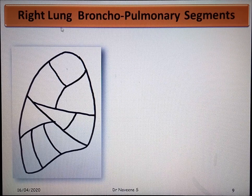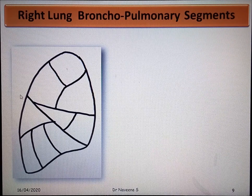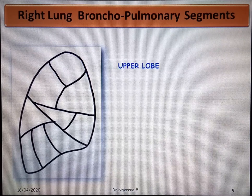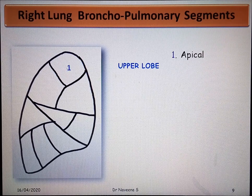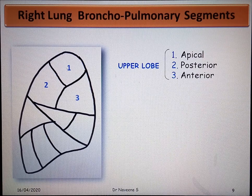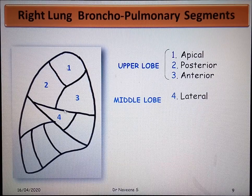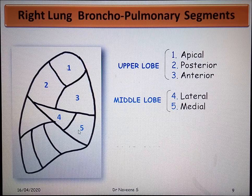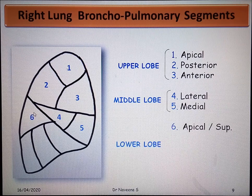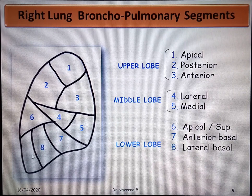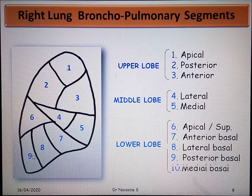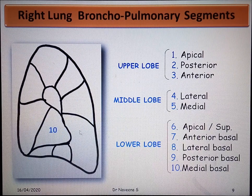Let's see the names of the right lung bronchopulmonary segments. Here is a diagram of the right lung showing its anterior border, oblique fissure and horizontal fissure. The upper lobe segments are called apical segment, posterior segment, and anterior segment. In the middle lobe: lateral segment and medial segment. In the lower lobe: apical or superior segment, anterior basal segment, lateral basal segment, posterior basal segment, and medial basal segment. The medial basal segment is seen only on the mediastinal surface just below the hilum.